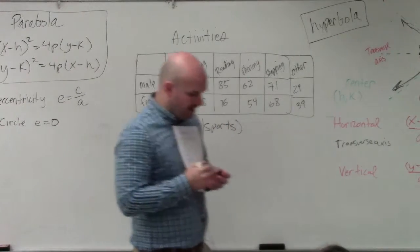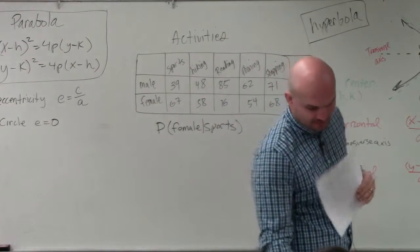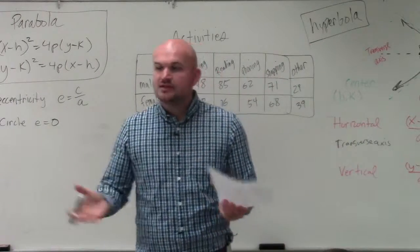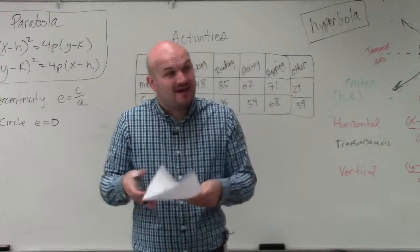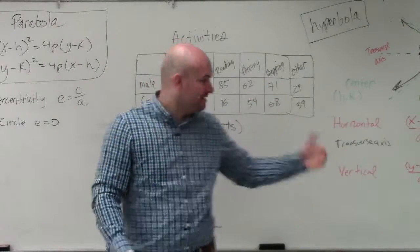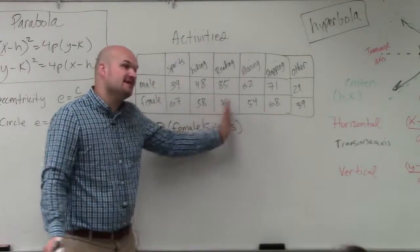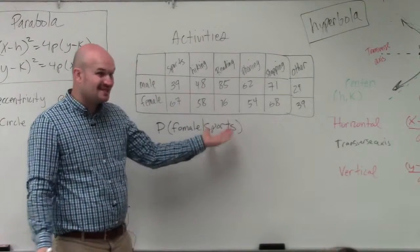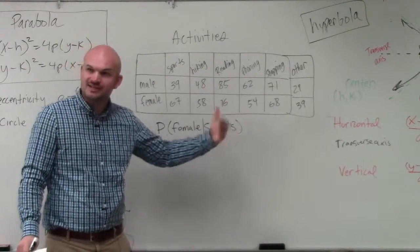The main important thing when we're doing conditional probability is we need to understand that condition. When we're finding a probability, it's all based on that 'such that' or that 'given.' So it's the probability of females given that they play sports. The sports is the condition. That's why we call it conditional probability.